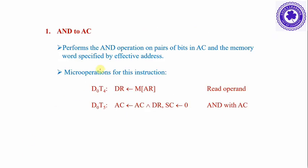The first instruction is AND to accumulator. It performs the AND operation on pairs of bits in the accumulator and the memory word specified by the effective address. The micro operations include: read from the memory word into the data register; then perform AND operation between the accumulator and the data register value; store the result into the accumulator; then set the sequence counter to zero to continue with the next instruction.